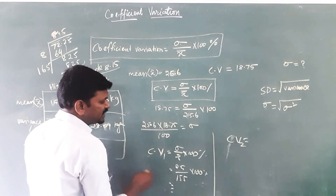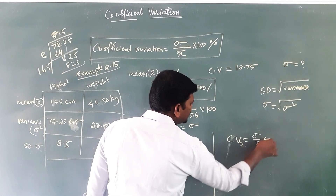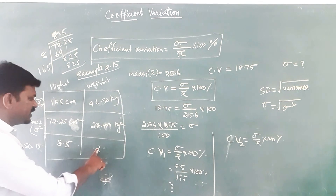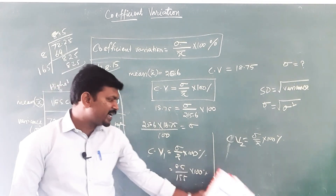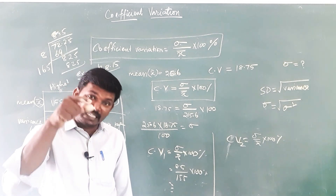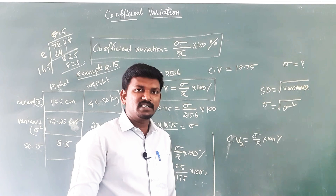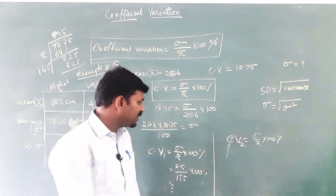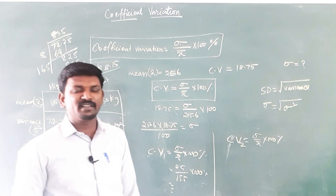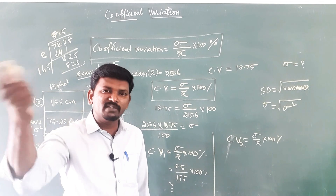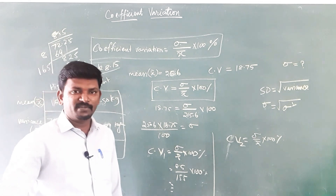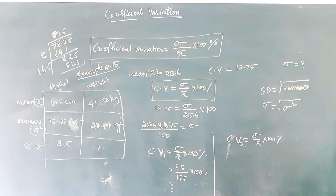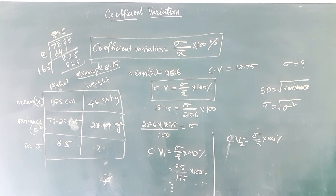Use the formula sigma divided by x-bar into 100, substitute the sigma and mean values, then simplify. Whichever data has the lesser coefficient of variation is the most consistent data; whichever data has the greater coefficient of variation is the most varying data. This is a very simple concept — understand the basic idea and you can solve all these kinds of problems.